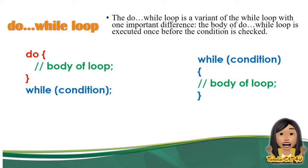What is a do-while loop? The do-while loop is a variant of the while loop with one important difference. The body of do-while loop is executed once before the condition is checked. The difference from while is that in do, the body is performed once before the condition. In while, if you notice the difference, the condition comes before the body. That's the main difference between the two.